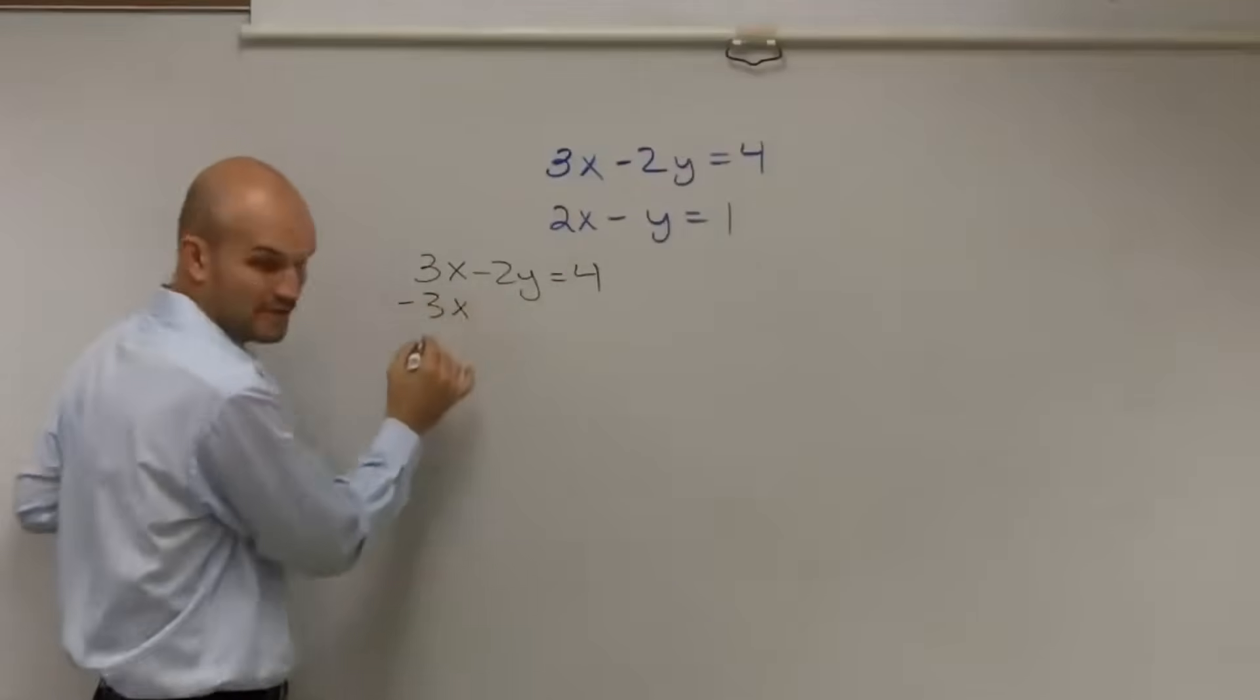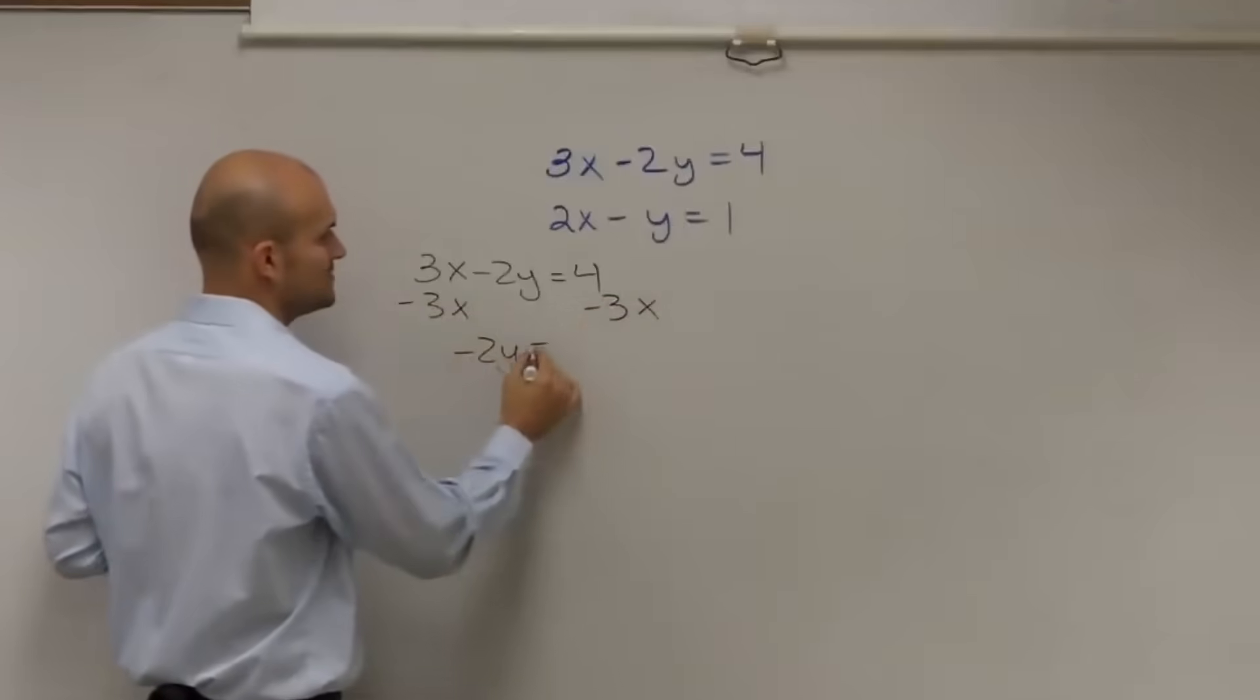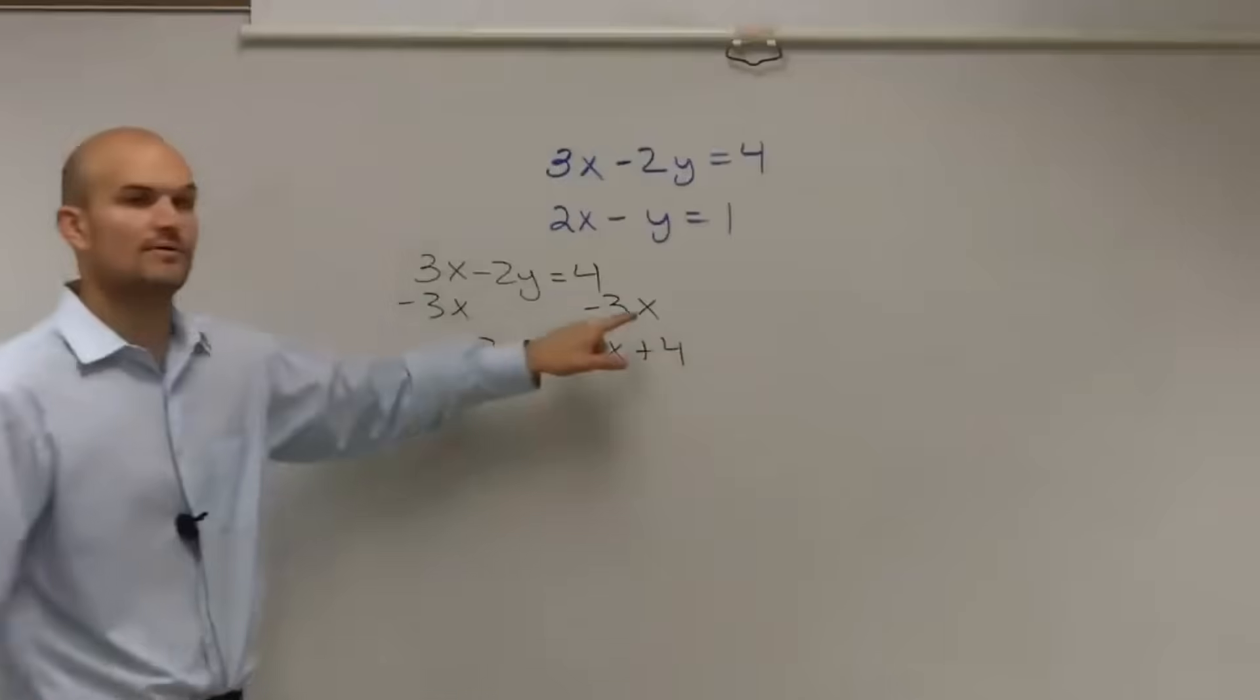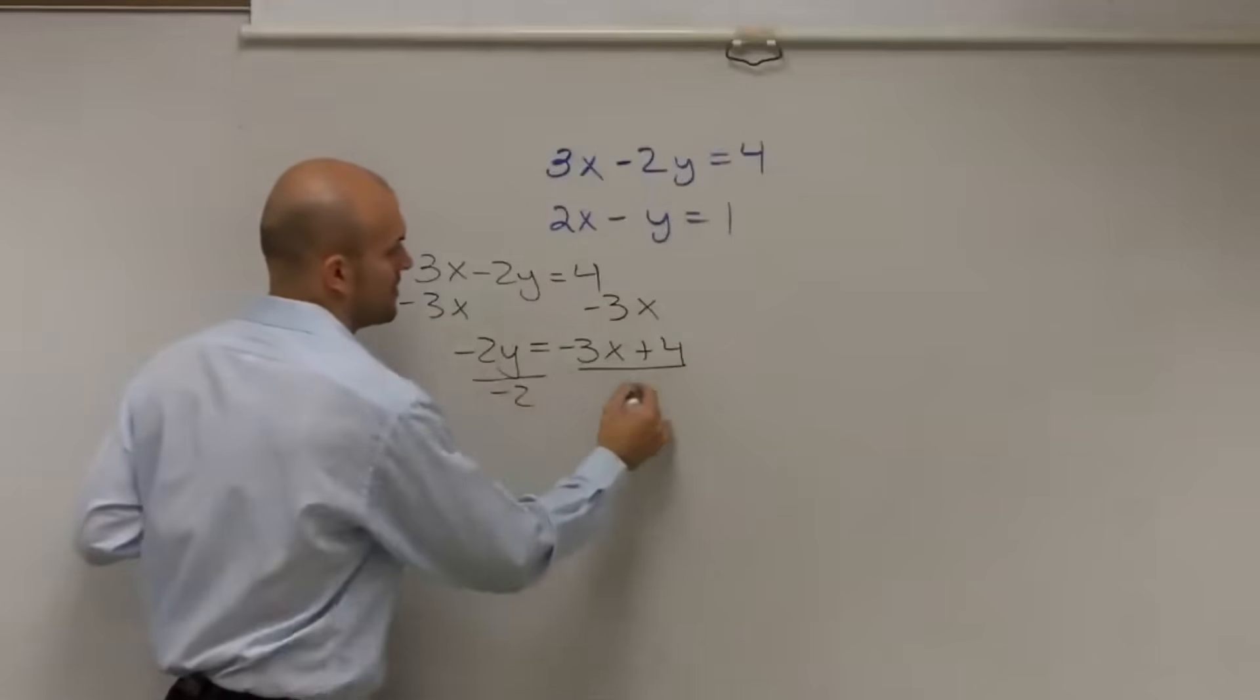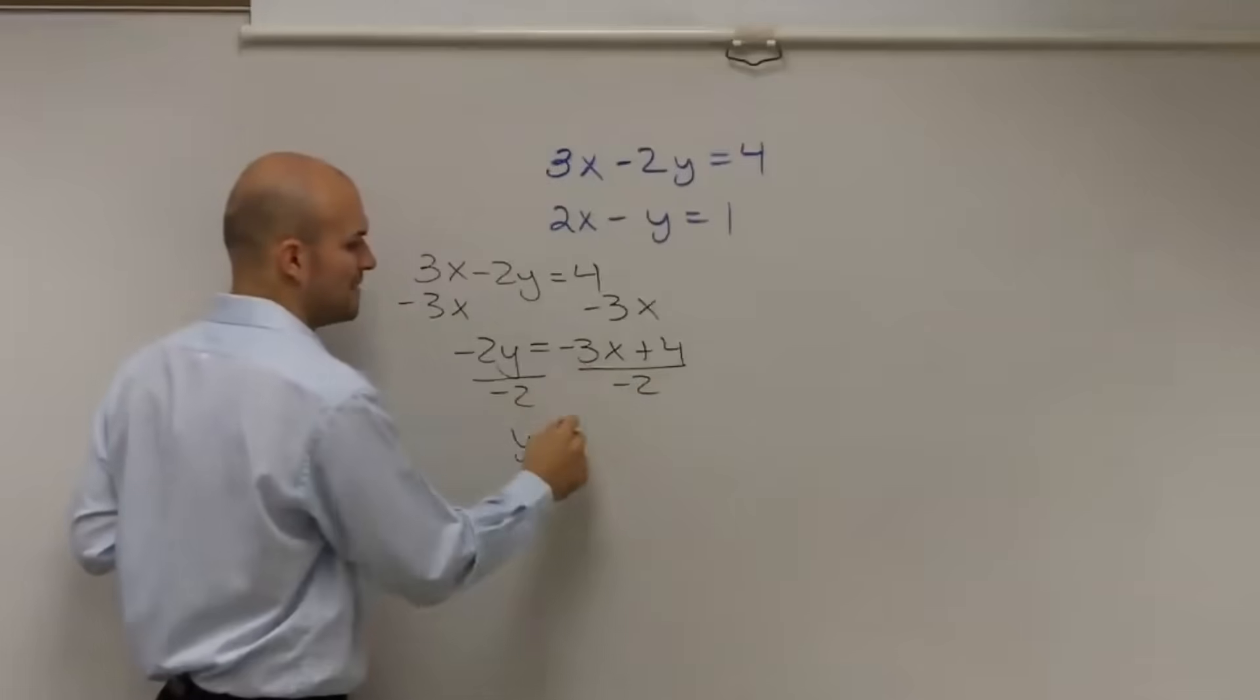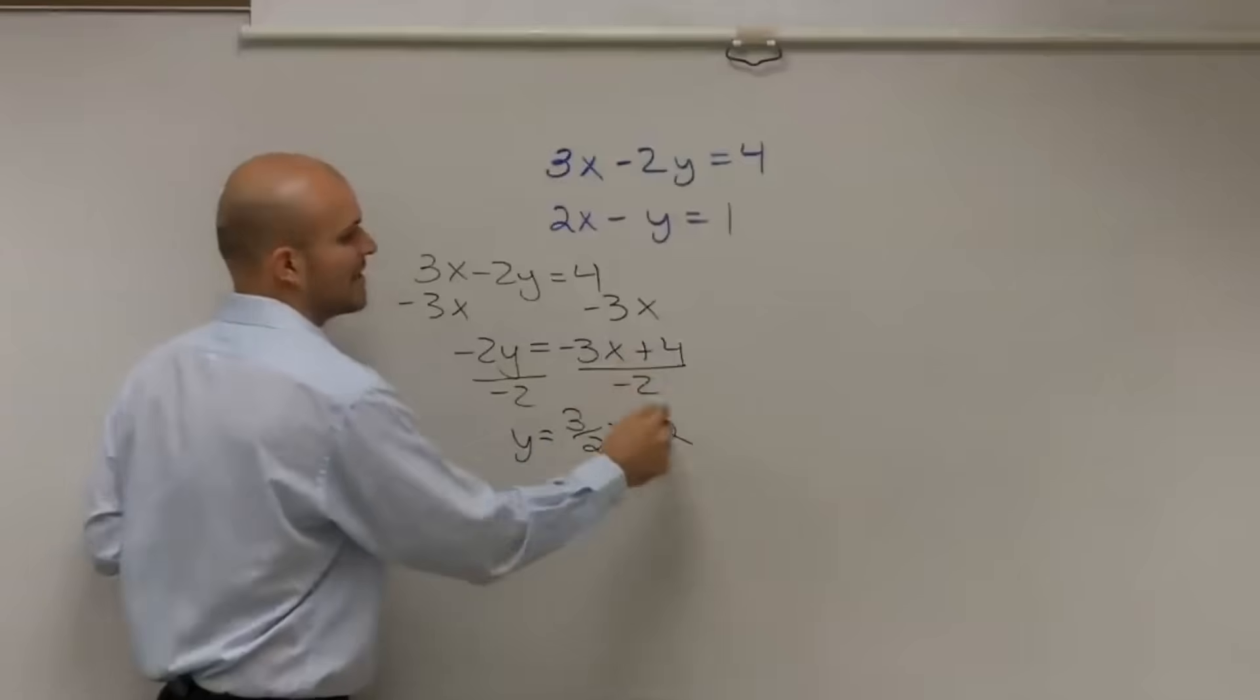To get y by itself in 3x - 2y = 4, I first need to subtract 3x on both sides. So I get negative 2y equals negative 3x plus 4. Then I need to divide by the negative 2. So I have y equals negative 3 divided by 2 is positive 3 halves x, and 4 divided by negative 2 is minus 2.